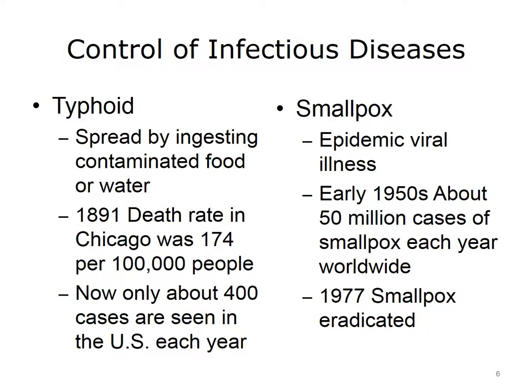Let's focus our attention on the control of infectious diseases. A classic example of public health success in this arena is the successful control of typhoid. Typhoid is caused by bacteria and is spread by ingesting contaminated food or water. The organism spreads through the body via the bloodstream and causes a fever and a systemic, sometimes potentially fatal, illness. In 1891, the typhoid death rate in Chicago alone was 174 per 100,000 people.